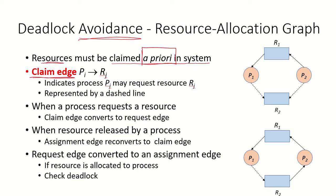A claim edge represents that a particular process Pi may require a particular resource Rj in future. Each process has declared the resources it wants, so though currently it is not using or requesting them, it may claim them in future. In this graph, R1 has already been allocated to P1 — that is an assignment edge. P2 is requesting resource R1 — that is a request edge. Currently P1 and P2 do not require R2, but in future they might. So we have claim edges shown by a dashed line, indicating that in future P1 may require R2 and P2 may also claim R2.